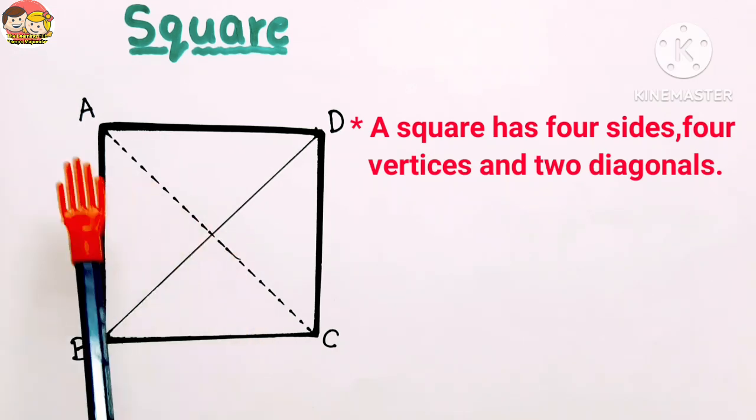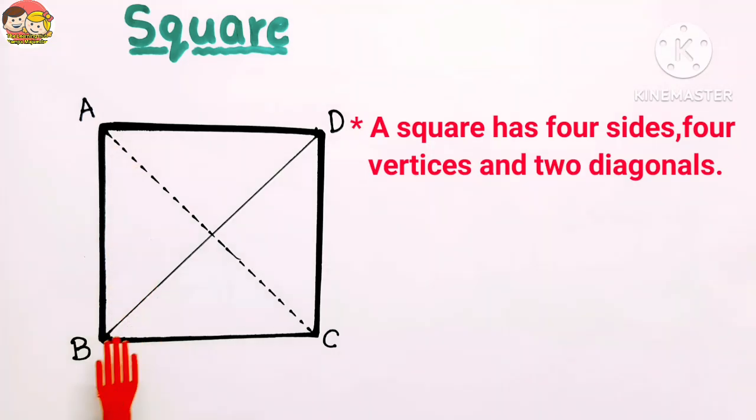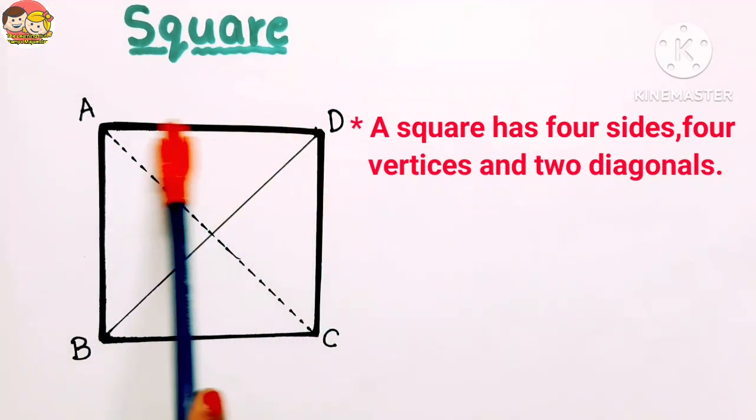Its vertices are A, B, C, and D. Its sides are AB, BC, CD, and DA.